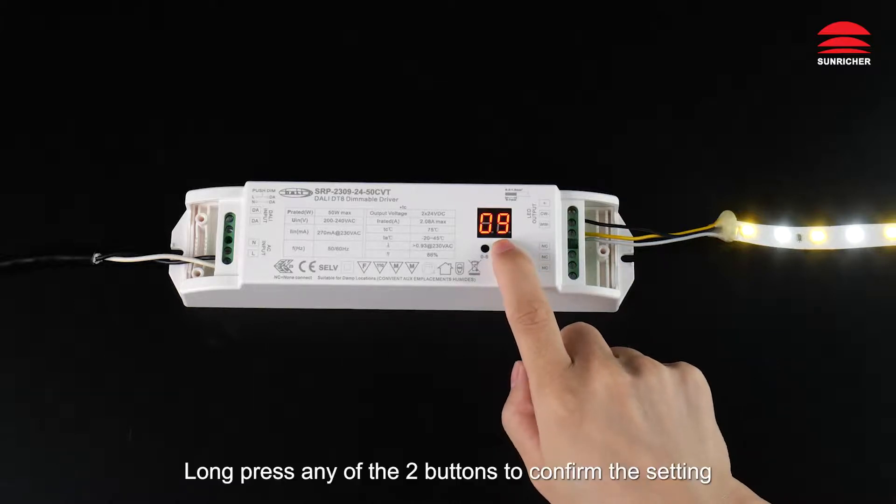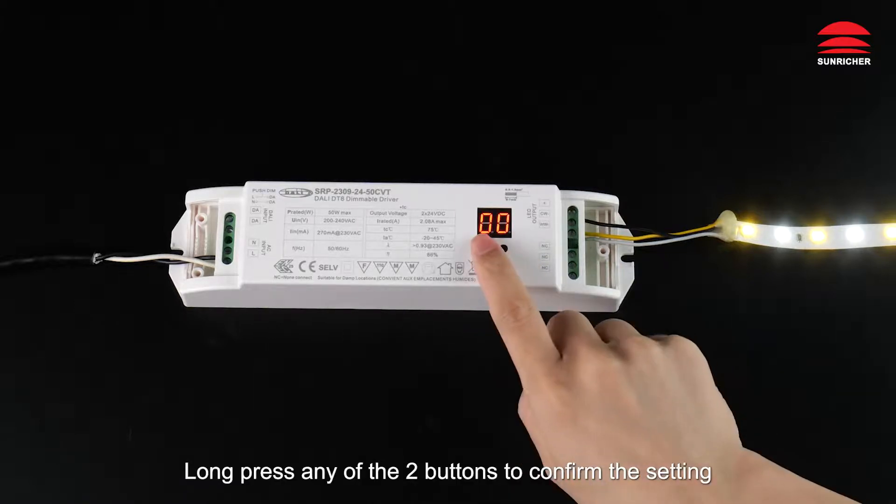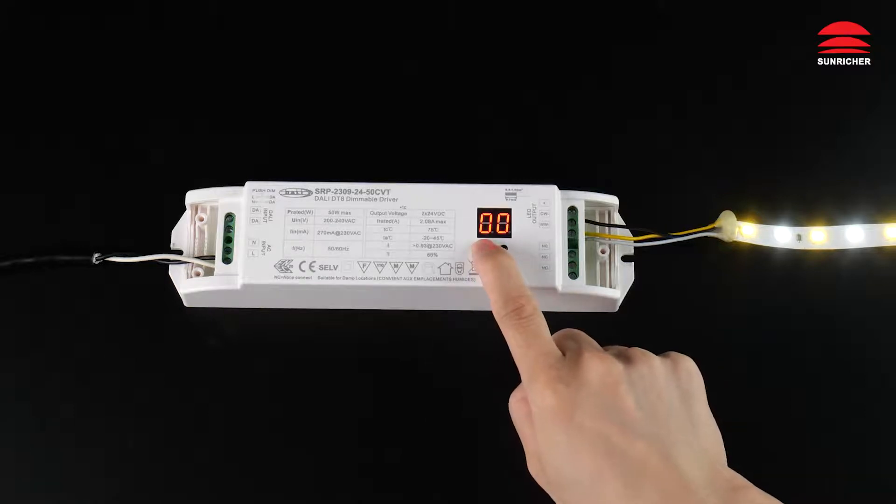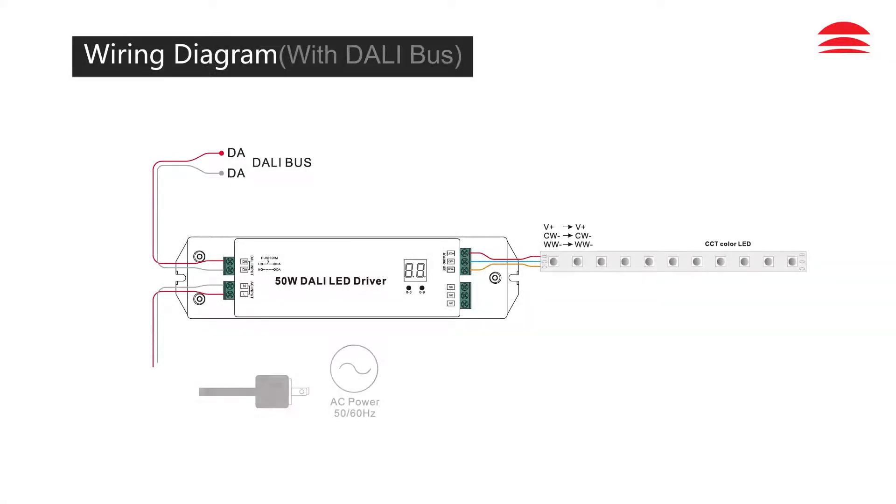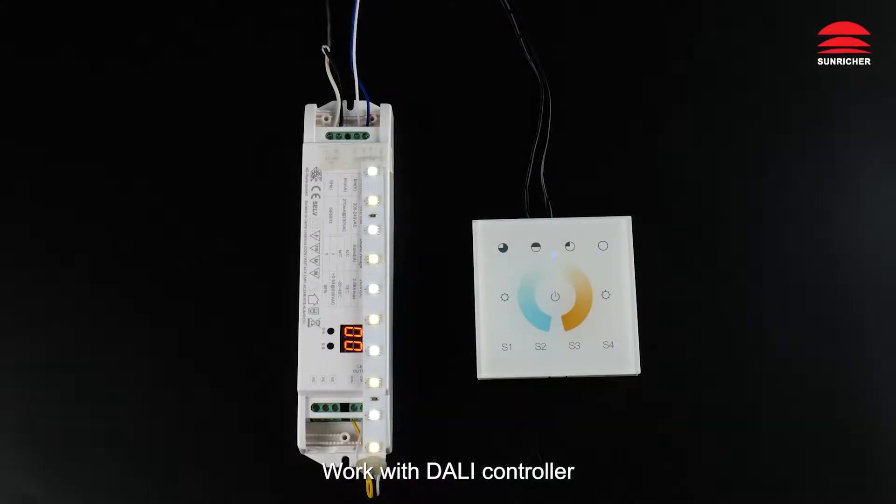Click first button to set tens position and second button to set units position. Long press any of the two buttons to confirm the setting. Work with DALI controller.